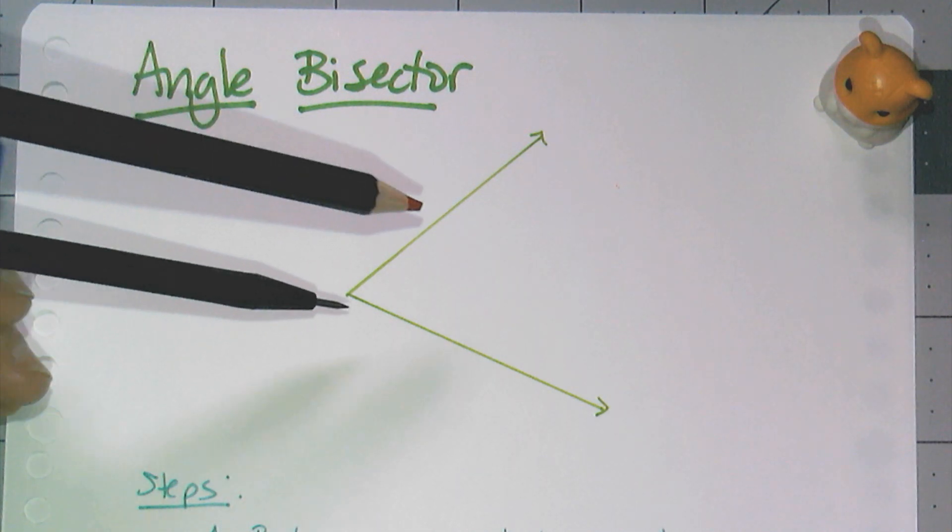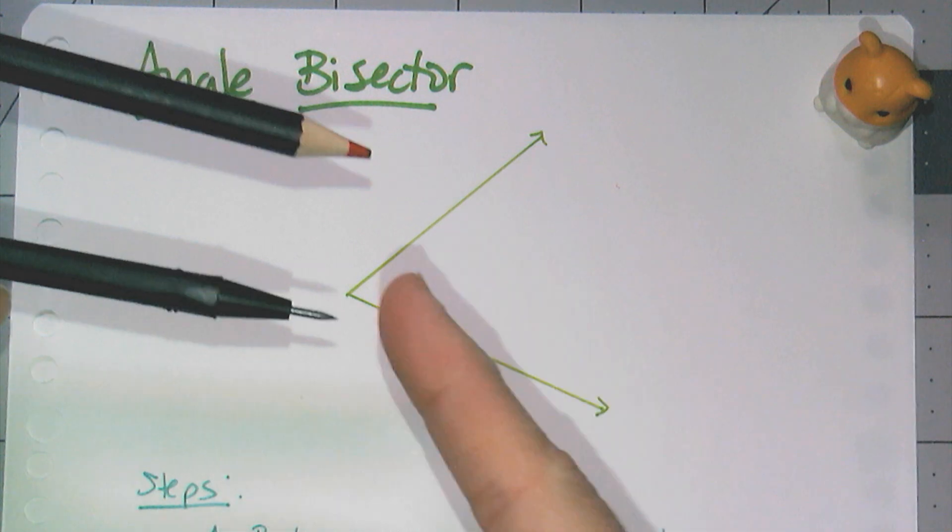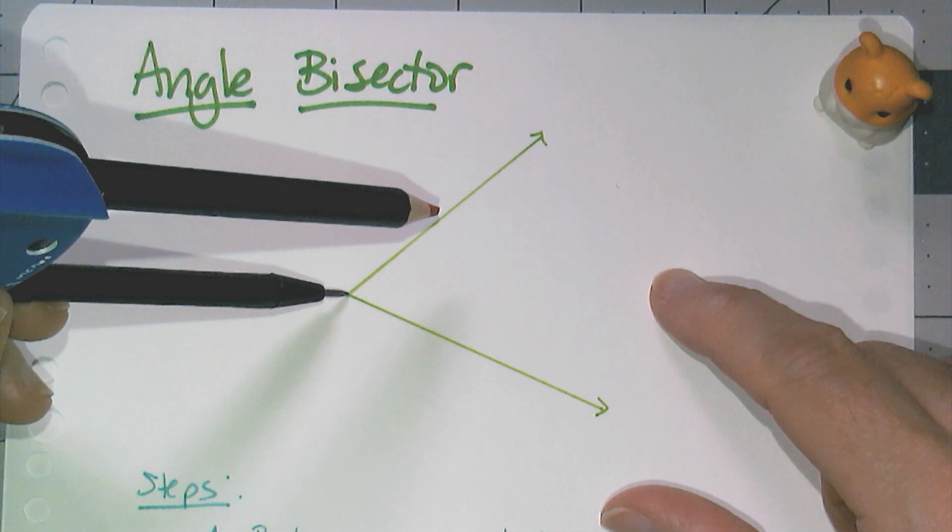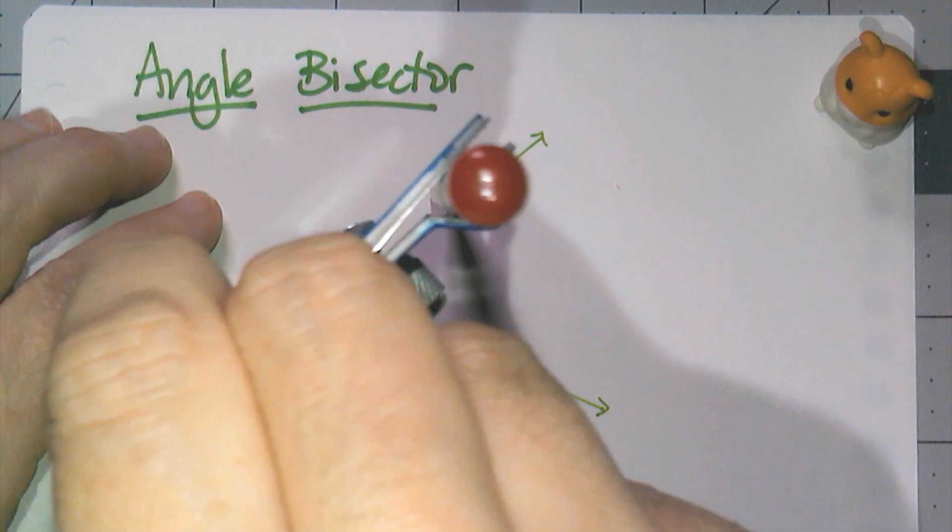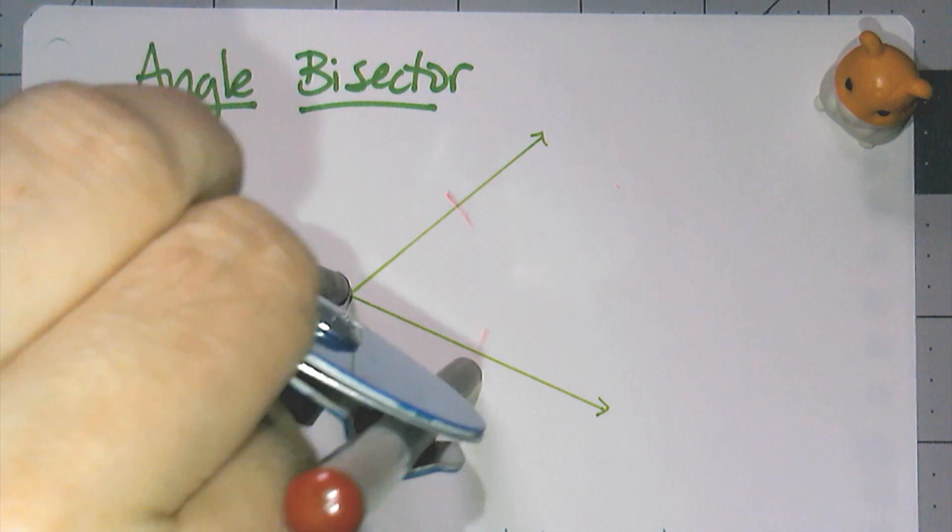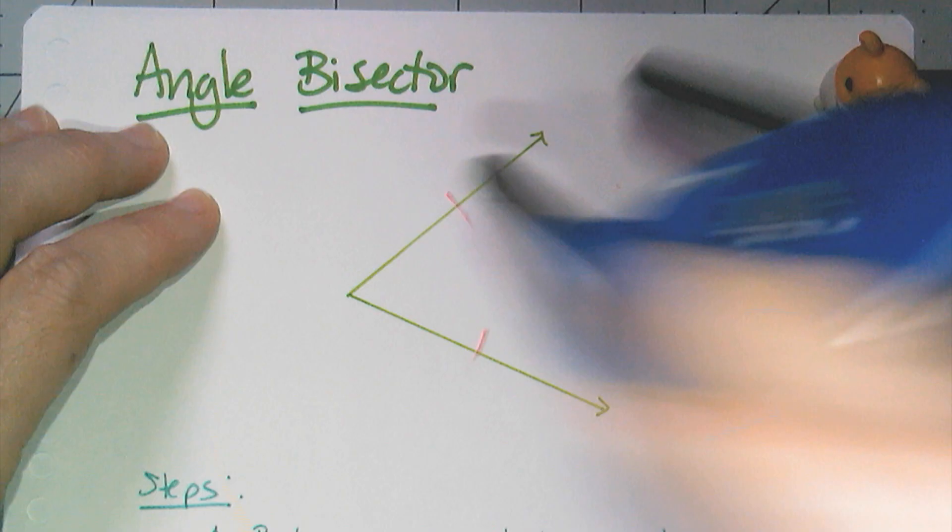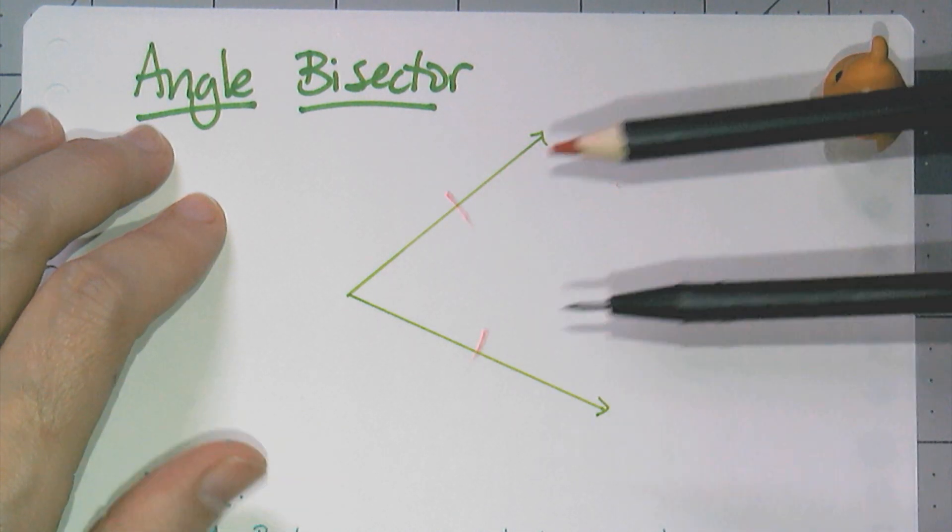So the steps of this are not too bad. What you do first is you stick the pointy end of your compass onto the vertex of the angle you are trying to bisect, and you swing an arc so that it intersects both sides of the angle. Remember, the rays make up the sides.